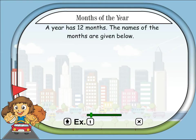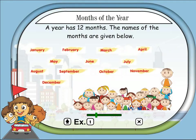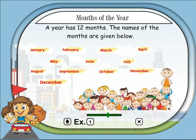Months of the year: a year has 12 months. January, February, March, April, May, June, July, August, September, October, November, December.